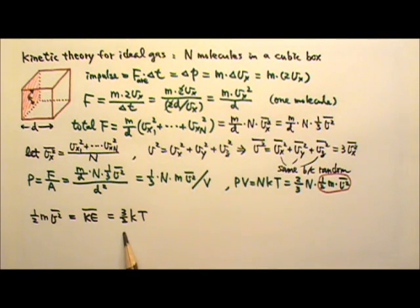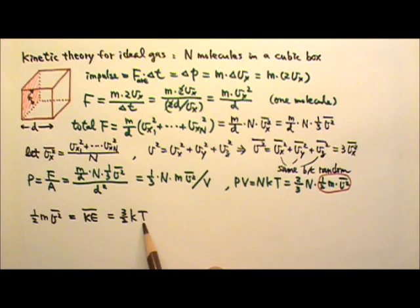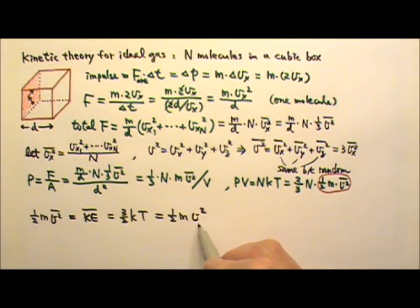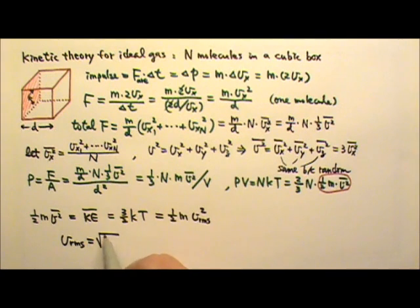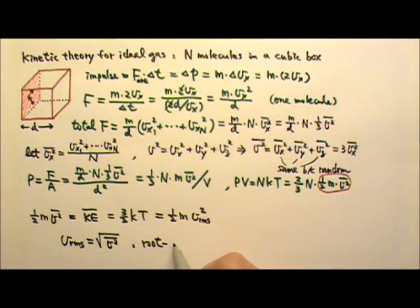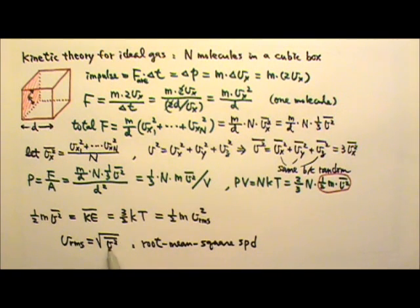You may have learned in chemistry that temperature is a measure of the average kinetic energy of a molecule. Because three halves is a constant and Boltzmann's constant k is also a constant, the average kinetic energy of a molecule is proportional to temperature. We can also write this average kinetic energy as one half mv squared, where this v has a special name: it's the rms, the root mean square speed. The root mean square speed squared equals the average of the speed squared, so the rms speed equals the square root of the average of the speed squared — that's why it's called the root mean square speed.